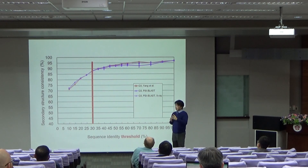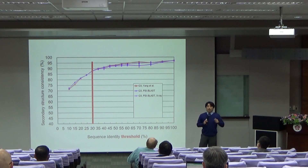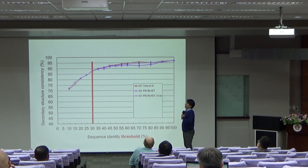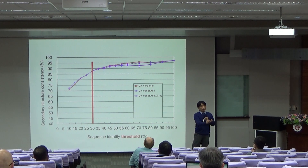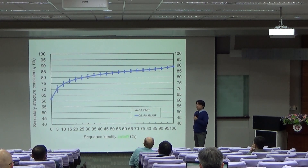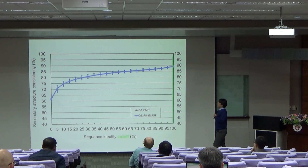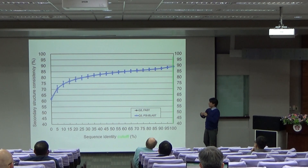First, we totally repeated the previous study with the same experimental conditions, using sequence alignment. Our results and the prior layers were very consistent — this also proved that our experimental skill was sound. Using sequence alignment to determine the upper limit of SSP, the result was about 88%.